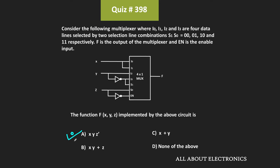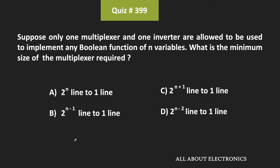Now let us move to the next example. In this question, we have been given that one multiplexer and one inverter is allowed to implement a boolean function with n variables. We need to find the minimum size of the multiplexer required. As discussed in the recent video, if you want to implement an n-variable function, it can be implemented with a multiplexer that has n−1 selection lines. For example, any three-variable boolean function can be implemented with a multiplexer with two selection lines — in other words, a 4×1 mux.